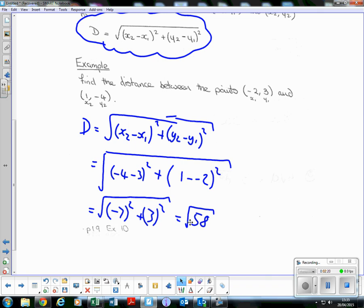Now we could type that into the calculator and write down 7-point-something. At Higher, we like surds. √58 is a perfectly acceptable answer. At Higher, we try to simplify it if we can, but there's no square numbers that are a factor of 58, so we're just going to leave it as √58. Right, have a go at Exercise 1.